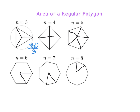For example, for this equilateral triangle, this angle is 360 divided by 3, which gives us 120 degrees. That's the measure of the central angle we use when finding the apothem. For the square, 360 degrees divided by 4 gives us 90 degrees. Then, 360 degrees divided by 5 gives us 72 degrees, and 360 degrees divided by 6 gives us a central angle of 60 degrees.